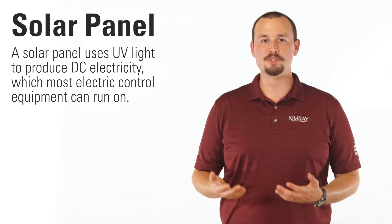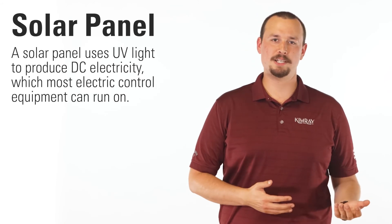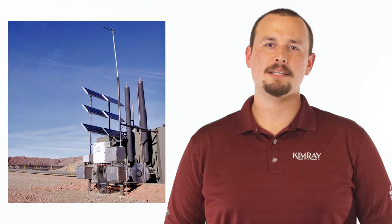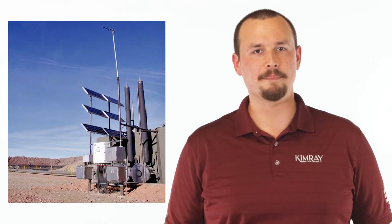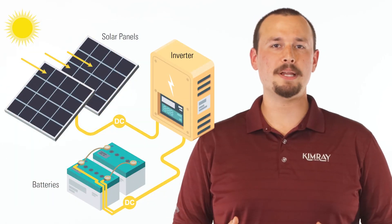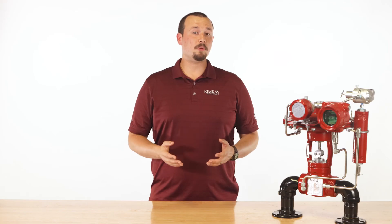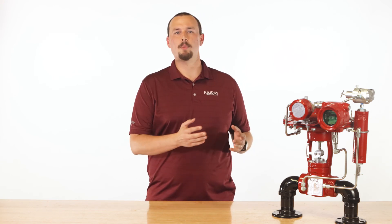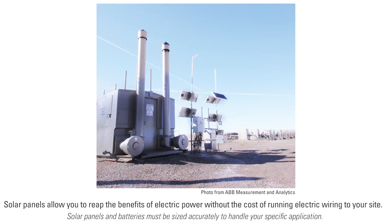The fifth term that we'd like to cover is solar panel. A solar panel uses UV light to produce DC electricity, which most electric control equipment can run on. The power captured from the sun is stored in a battery or a bank of batteries. Solar panels can be used in an array of oil and gas applications and are common in more remote areas. Solar panels allow you to reap the benefits of electric power without the cost of running electric wiring to your site.